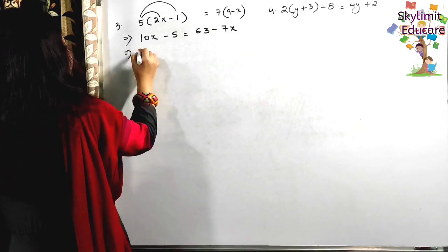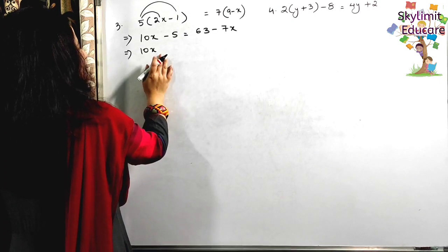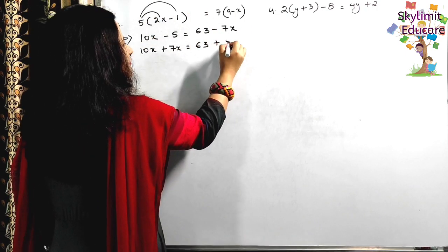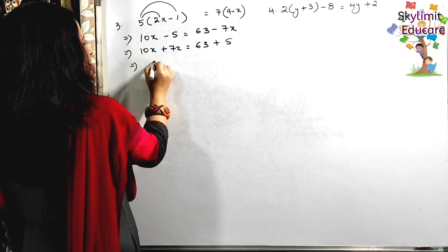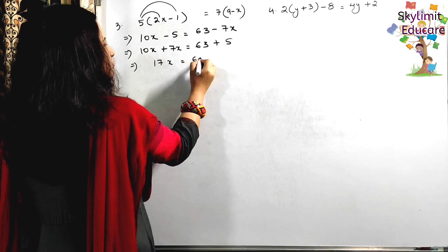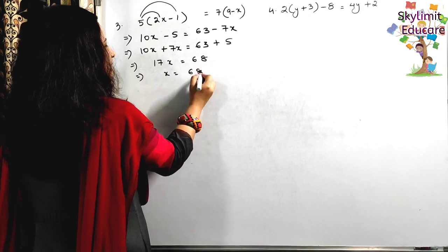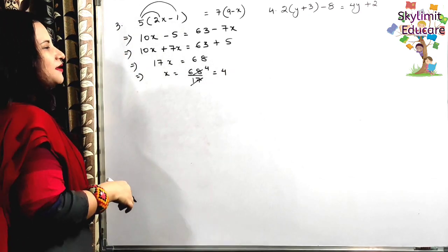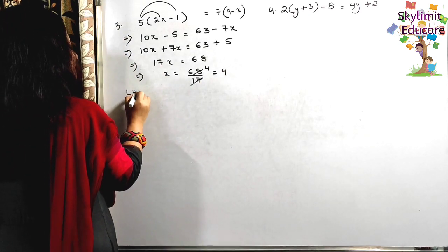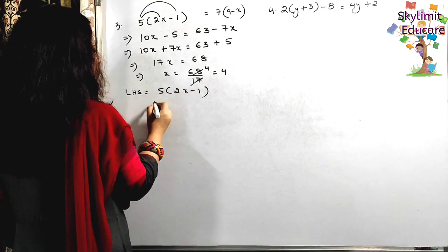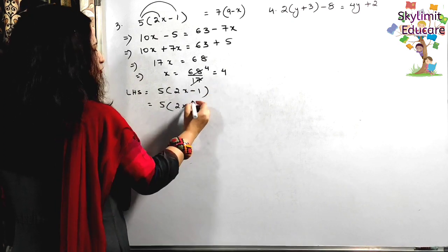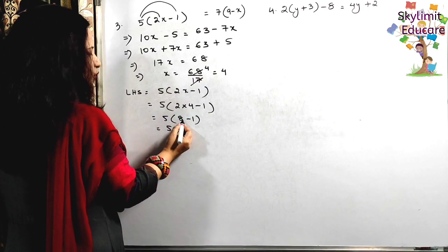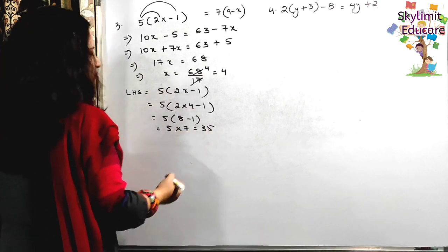Now solving further: bring minus 7x to the left side — it becomes plus 7x. Take minus 5 to the right side — it becomes plus 5. Both x terms are like terms: 10 + 7 = 17x. On the right: 63 + 5 = 68. So x = 68 ÷ 17. Since 17 × 4 = 68, the value of x is 4. Let's verify: LHS is 5(2x - 1). Substitute x = 4: 2 × 4 = 8, minus 1 is 7. So 5 × 7 = 35.